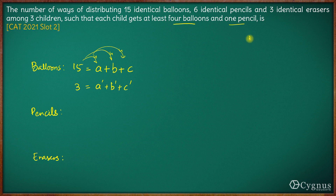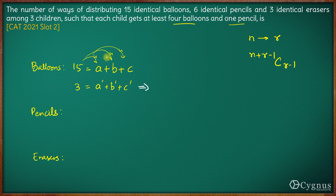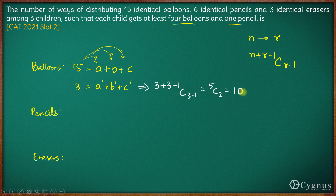So distributing 15 balloons amongst 3 children with this restriction is the same as distributing 3 balloons with no restriction. We know N identical objects can be distributed in R groups without any restriction as N plus R minus 1 C R minus 1. So the number of ways comes out to be 3 plus 3 minus 1 C 3 minus 1, which is 5 C 2 and 5 C 2 is 10.